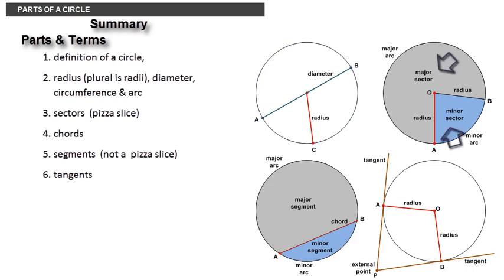And you have sectors which are pizza-like slices of a circle, chords, segments which are not pizza-like slices of a circle and finally tangents.